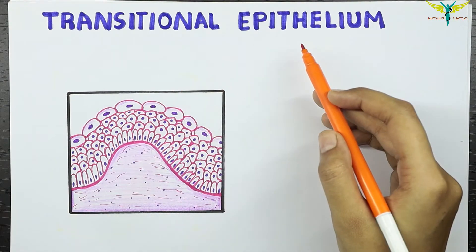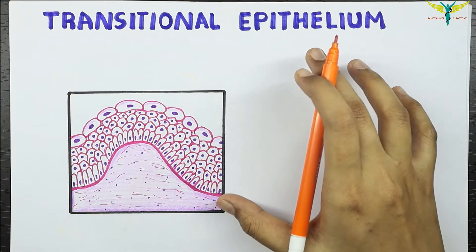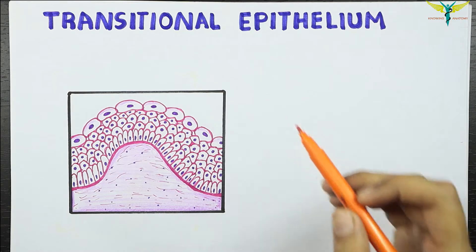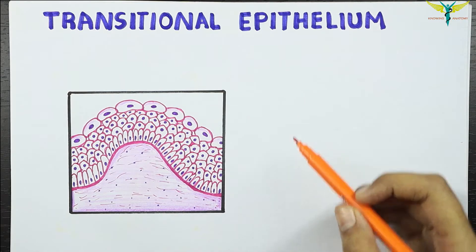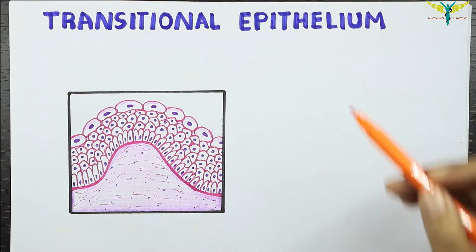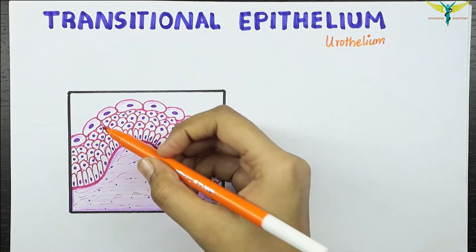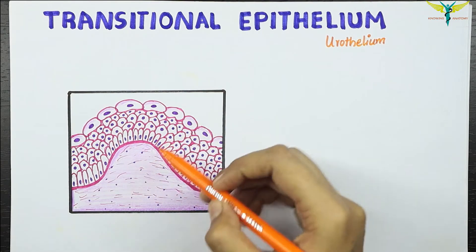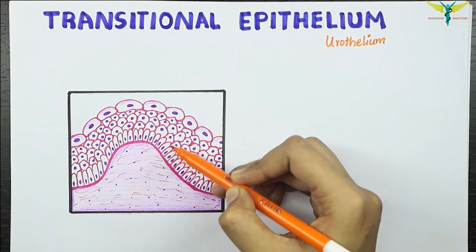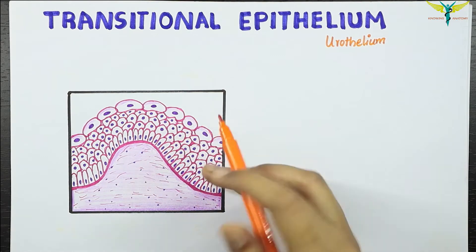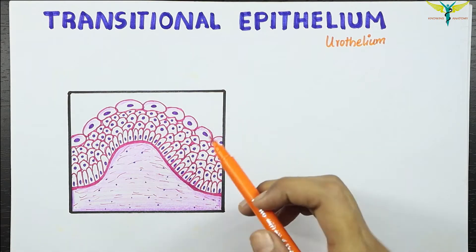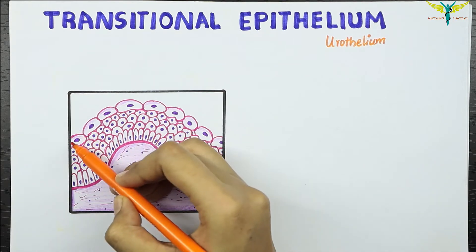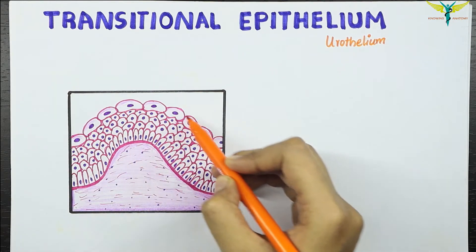The transitional epithelium is also called urothelium because of its location. It is a multi-layered epithelium that is four to six layers thick, and it differs from stratified squamous epithelium in that the surface cells are not squamous.